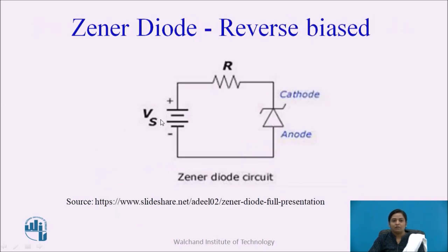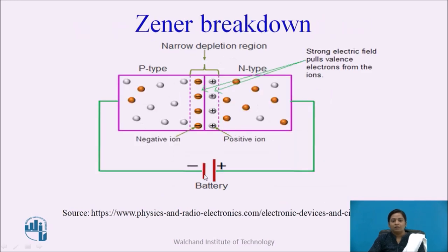In reverse biasing, the positive terminal of the external DC supply is applied to the cathode and the negative terminal is applied to the anode. Whenever the reverse voltage is small, a small current flows through the device due to minority charge carriers — that is, electrons which are present in P type semiconductor, and holes which are present in N type semiconductor. Due to these minority charge carriers, a very small amount of current flows through the device, called leakage current.